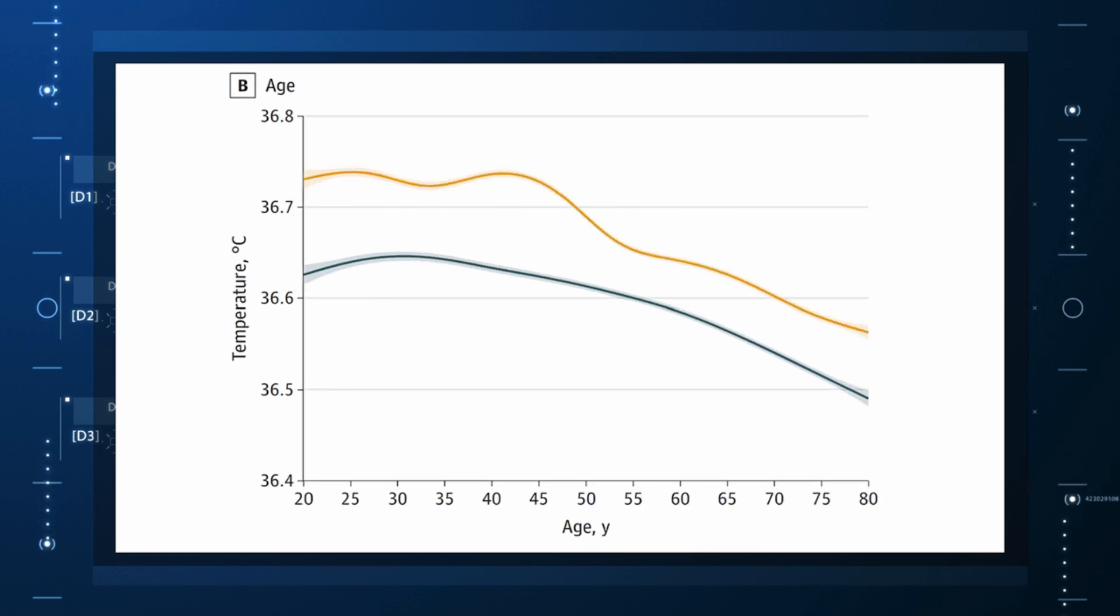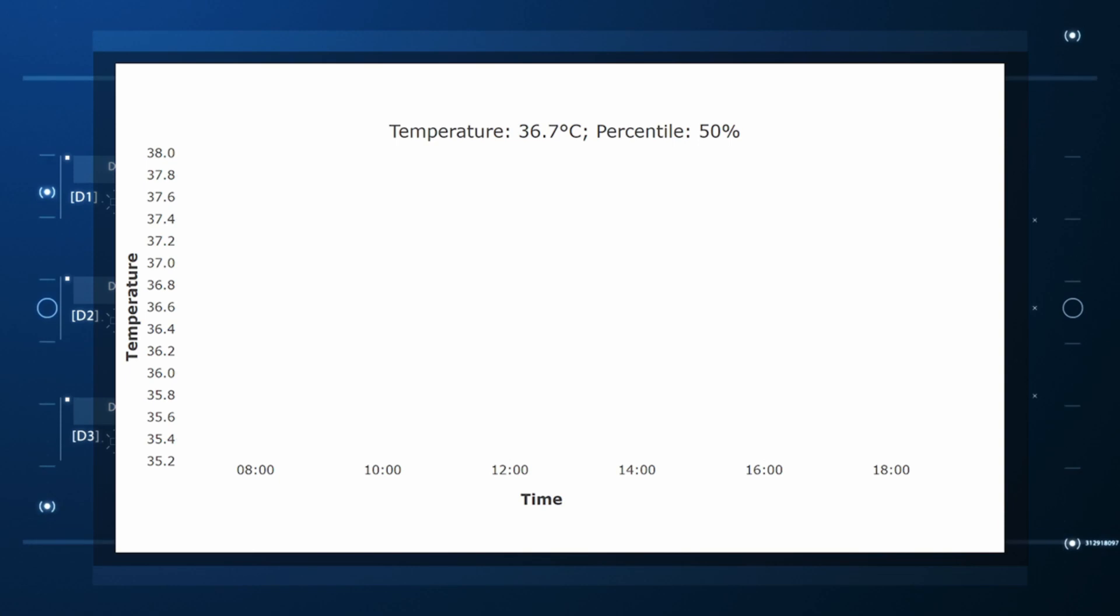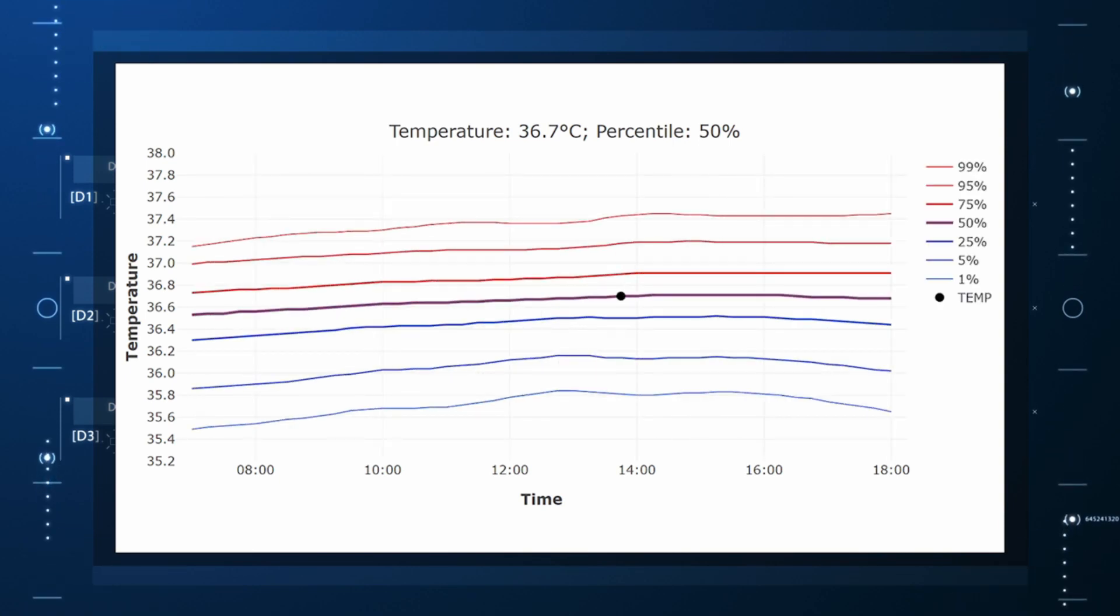In fact, the researchers built a nice online calculator where you can put in your own or your patient's parameters and calculate normal for them. Here's mine. My normal temperature at around 2pm should be 36.7 degrees.